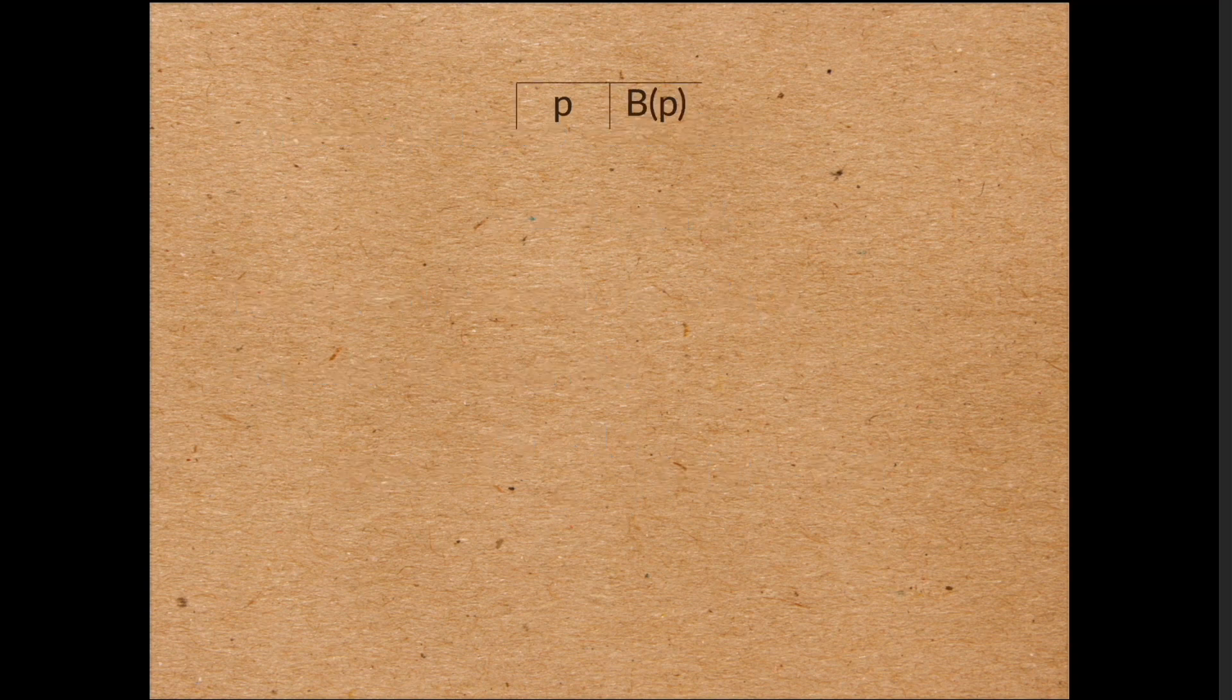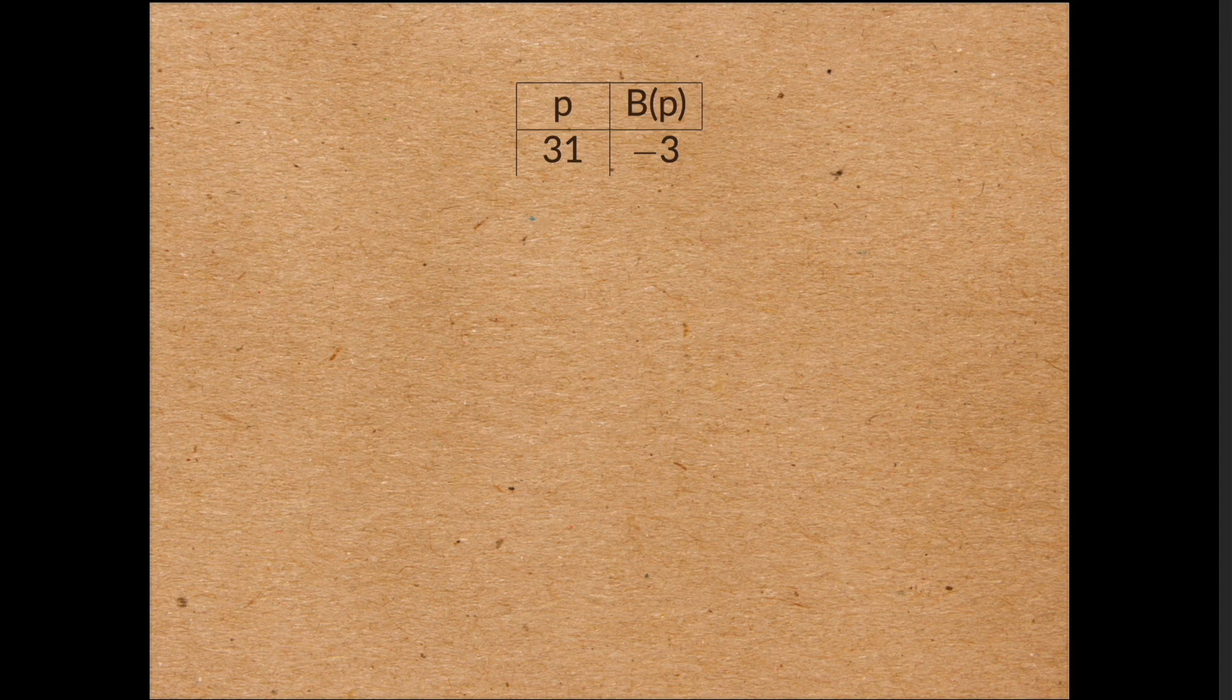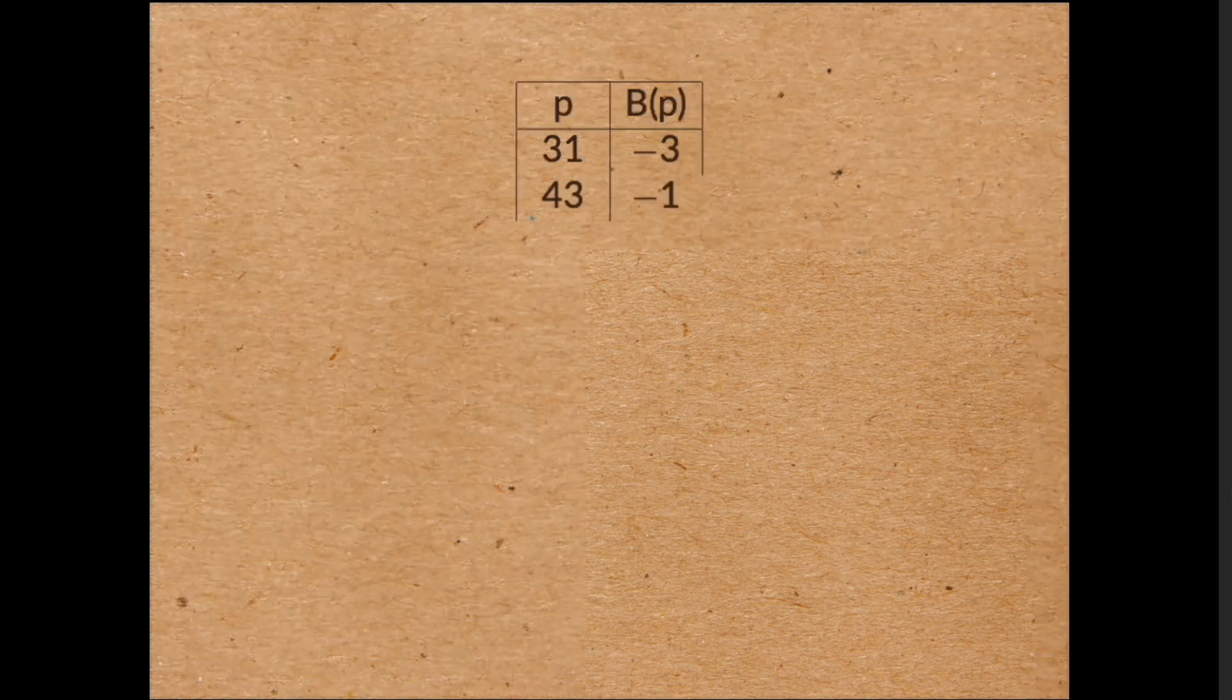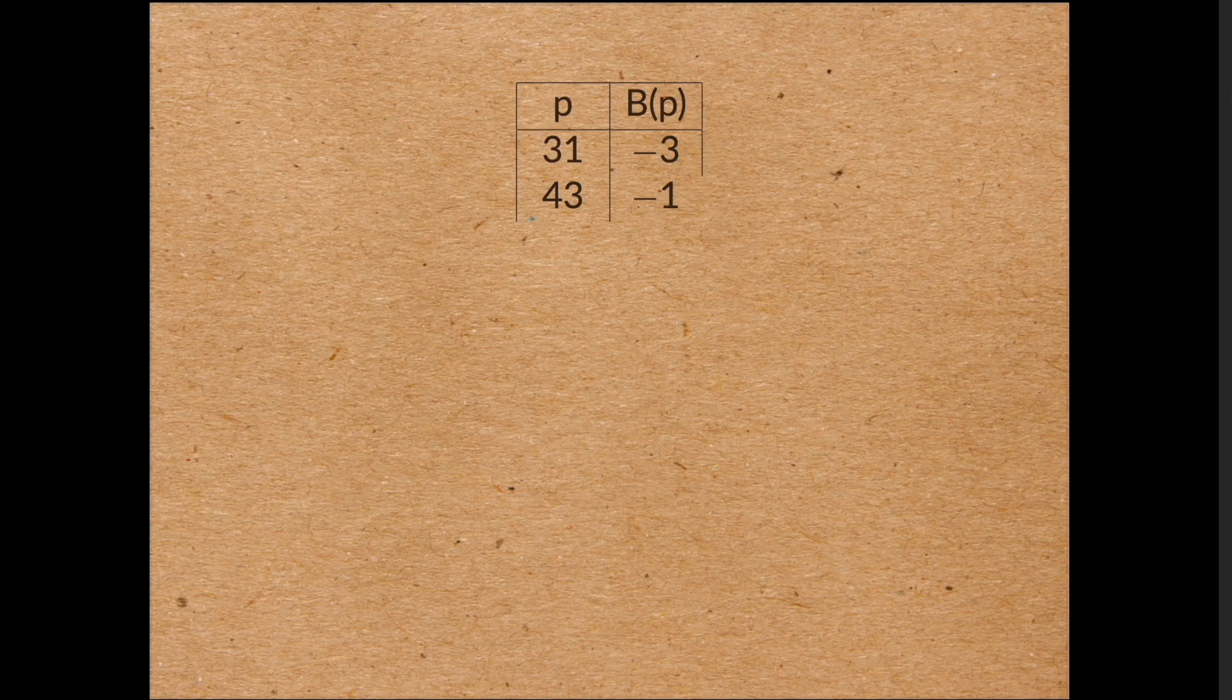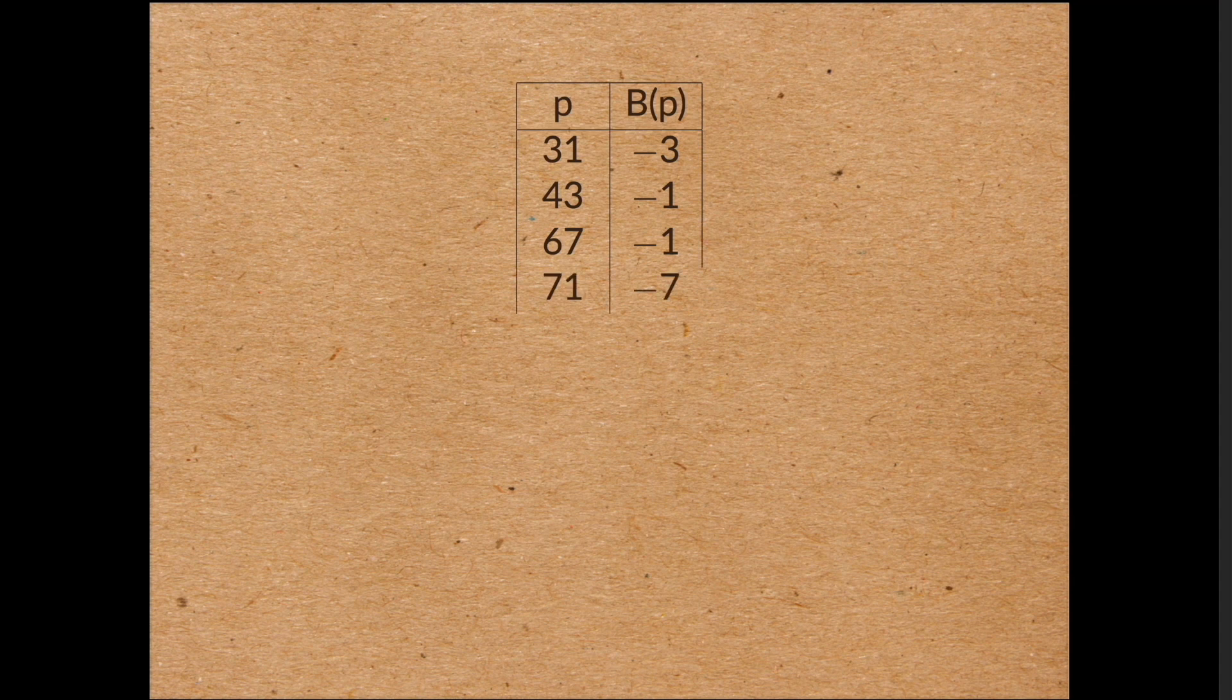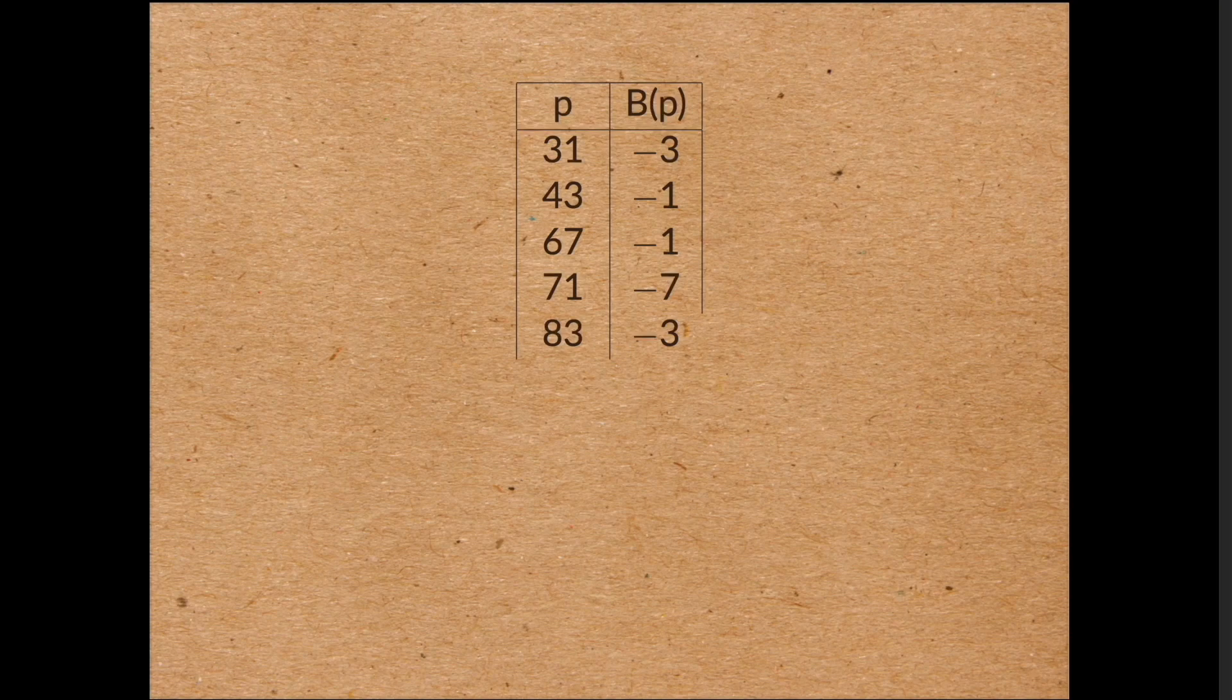So 31 is 3 mod 4, and the period is 15, so that's exactly a number of this form. And for 31, b of p is minus 3. Let's write down a few more primes. 43, we get minus 1. 67, we get minus 1. 71, we get minus 7. As we keep going, we notice that b(p) always seems to be an odd number, and it always seems to be negative.